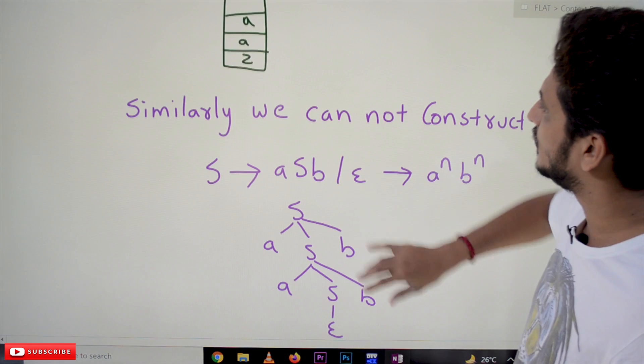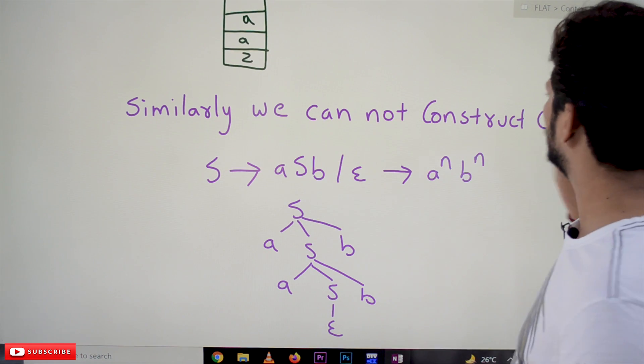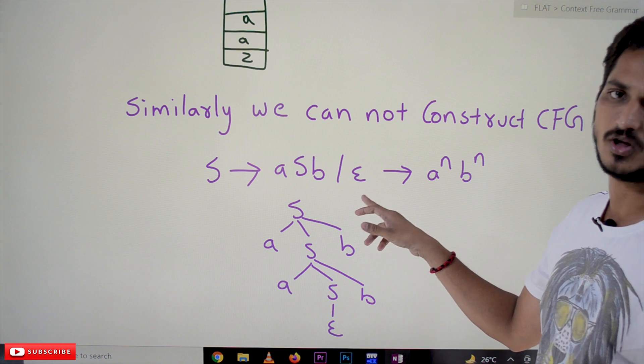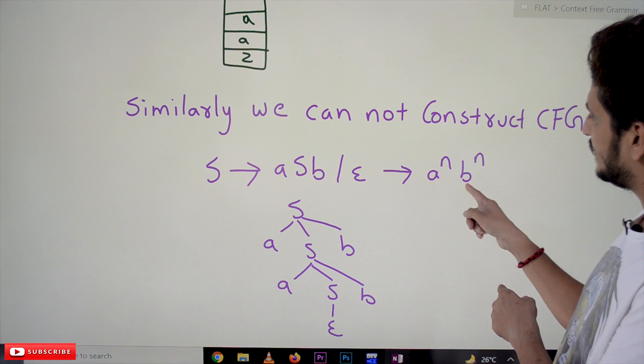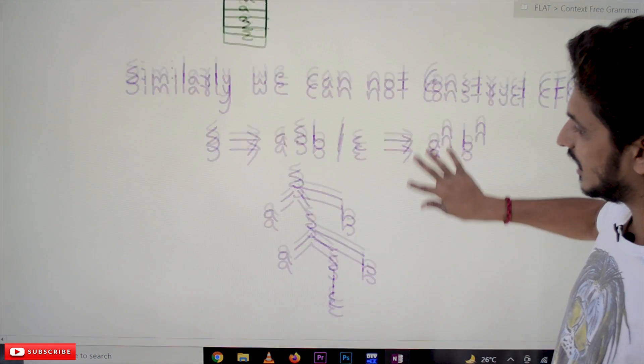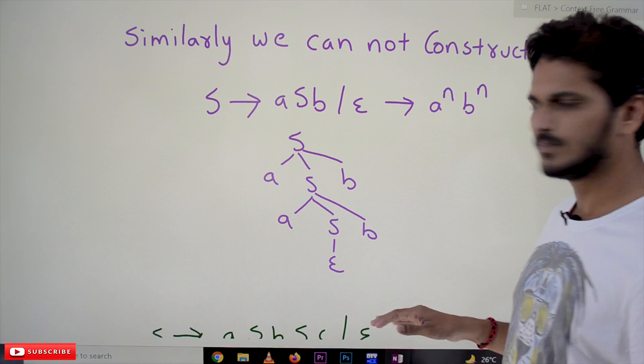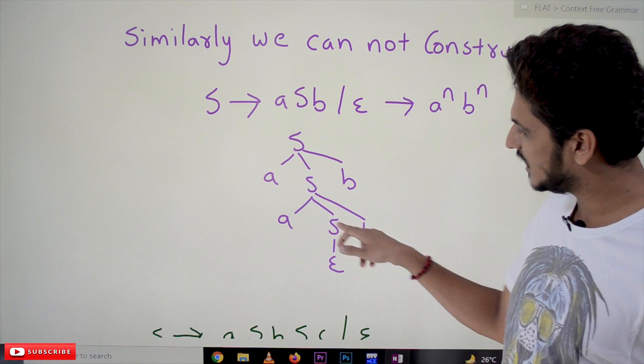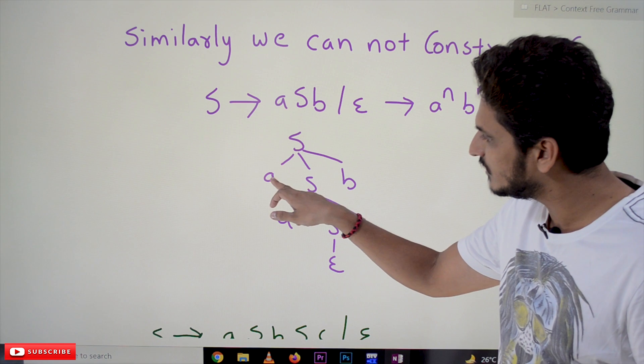I will give a good intuition about why we cannot construct context-free grammar also. So let's try to elaborate this. Similarly, we cannot construct context-free grammar. S tends to aSb or epsilon. This is the context-free grammar for the language a^n b^n.